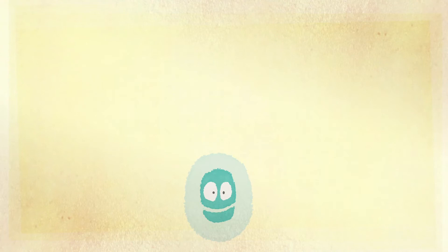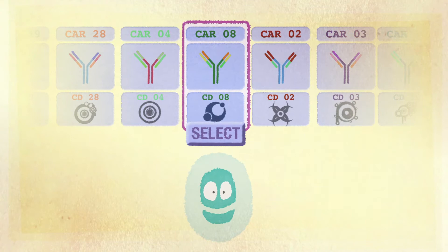For example, the CD19 of cancer cells is targeted for lymphoma, and other components will be targeted for other diseases.